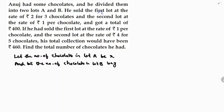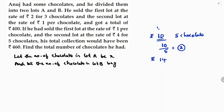Now, he sold the first lot at the rate of Rs. 2 for 3 chocolates. To find the price of one chocolate: for example, if it is Rs. 10 for 5 chocolates, then the price of each chocolate will be 10 by 5, which equals 2. Similarly, if Rs. 14 for 2 chocolates, then for one chocolate it will be 14 by 2. So total price divided by number of chocolates gives you the price per chocolate.